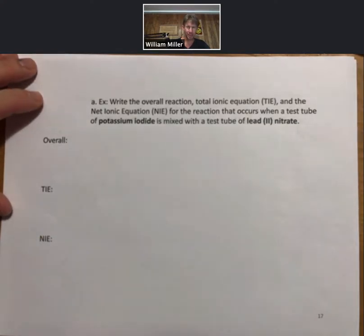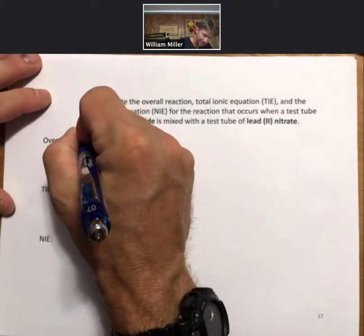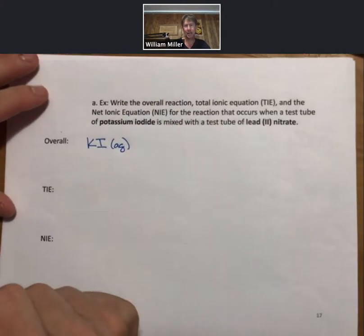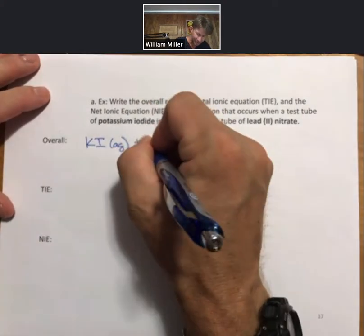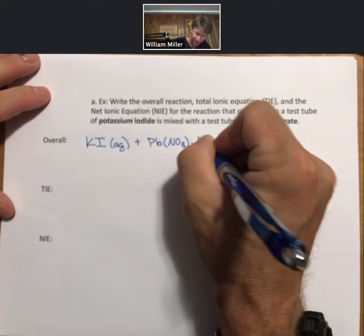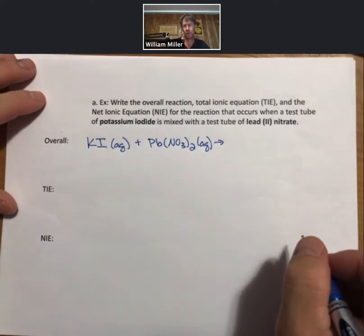And so for this process, for potassium iodide mixed with lead nitrate, we'll write out the two formulas. Potassium iodide plus lead nitrate. And one of the things I'd like to emphasize as we do this is you're always writing good formulas.